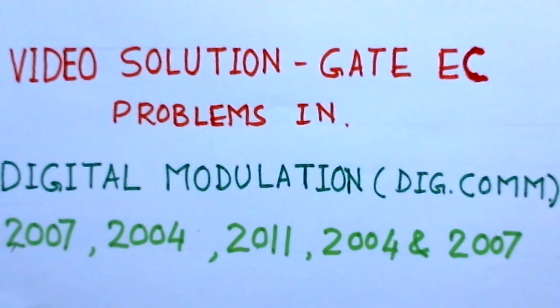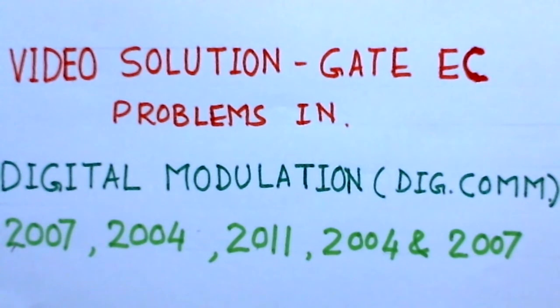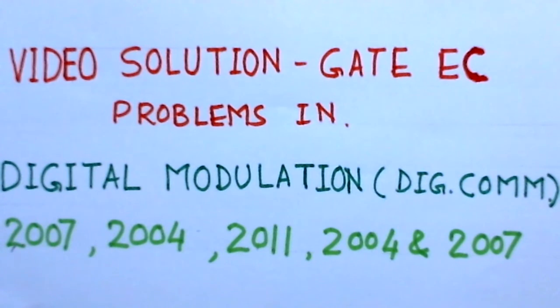The second problem is of GATE 2004. Binary data rate is given and one has to find the bandwidth for BPSK and QPSK systems.